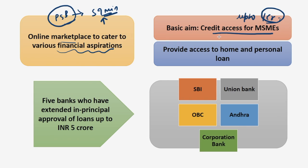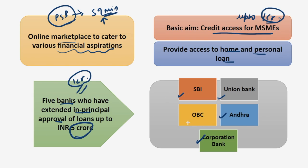This scheme has since been widened and the benefits available to MSMEs earlier are now available to everyone in the form of home and personal loans. Customers will get multiple options to choose a bank at the completion of their digital journey. Five banks extended in-principle approval of loans up to Rs. 5 crore from the earlier Rs. 1 crore: SBI, Union Bank, Andhra Bank, Corporation Bank, and Oriental Bank of Commerce.